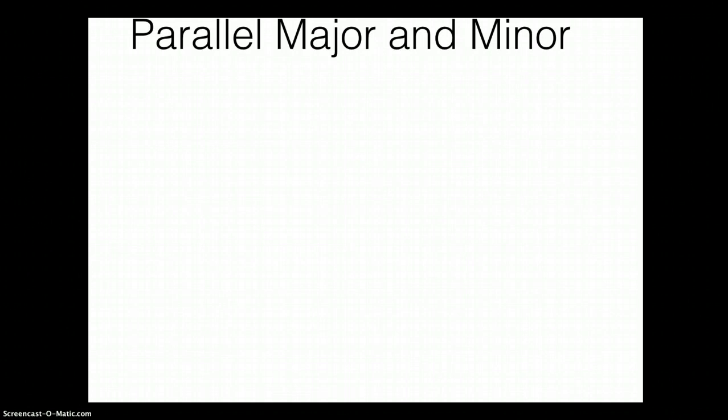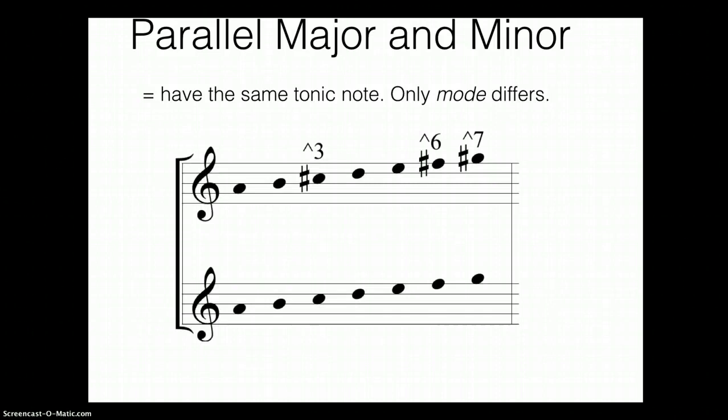Anytime we're talking about mode mixture we're always talking about the parallel major and minor key. That means the keys have the same tonic note, only the mode differs. As you know from freshman theory, this means that only three scale degrees are different between the parallel major and the minor.